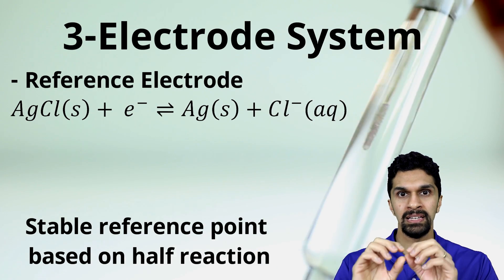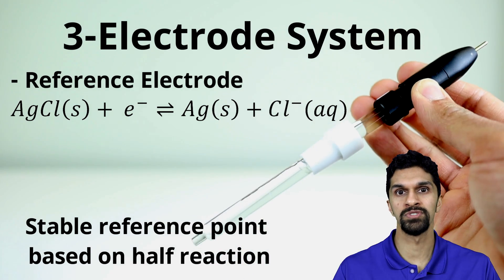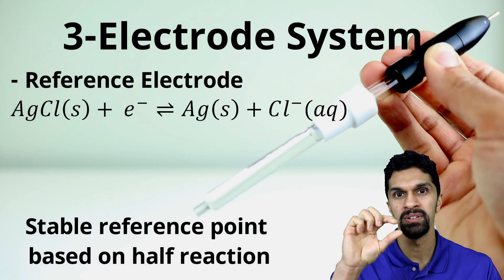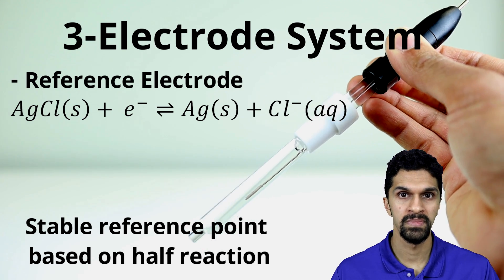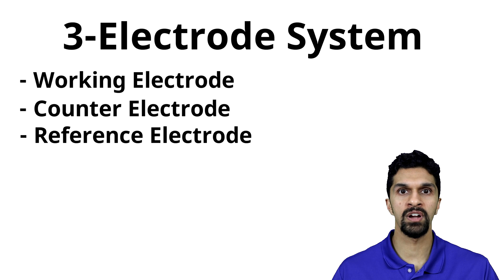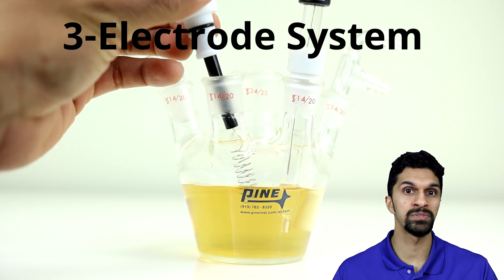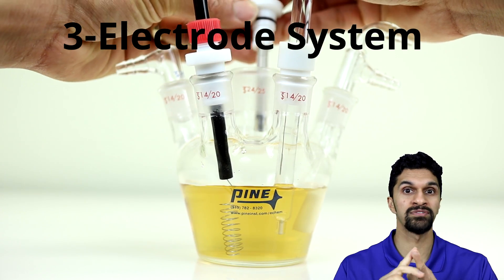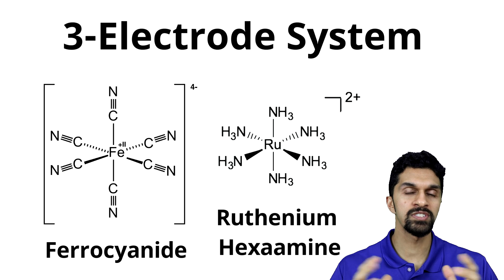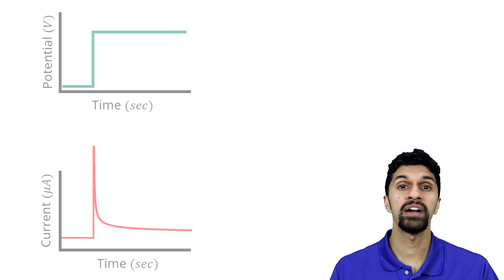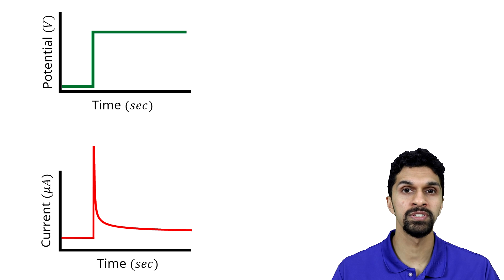The reference electrode represents a stable reference point in our electrochemical system. We commonly use silver/silver chloride: a silver wire encased in a silver chloride salt in a glass tube with saturated potassium chloride solution and a small glass frit at the end to maintain electrical contact. All three electrodes — working, counter, and reference — are placed into a conductive electrolyte solution containing a redox-active analyte such as ferrocyanide or ruthenium hexamine.